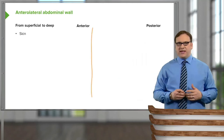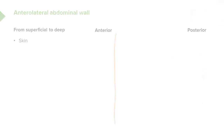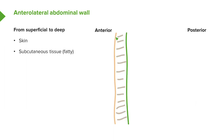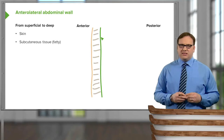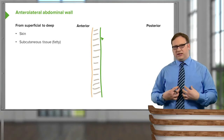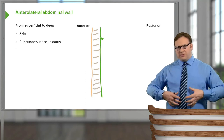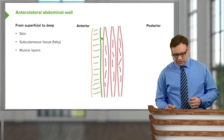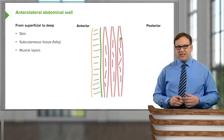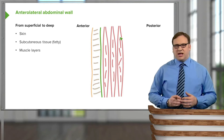Starting with some basics of the anterolateral abdominal wall — from anterior to posterior, most anteriorly is the skin, the outer layer you see when you take your shirt off. Deep to that layer of skin, we have some subcutaneous fatty tissue immediately deep to the skin. Then in the more lateral aspect of the abdomen — not where the rectus abdominis muscles are but more laterally — we find three layers of muscles: our oblique muscles and our transversus abdominis muscles.